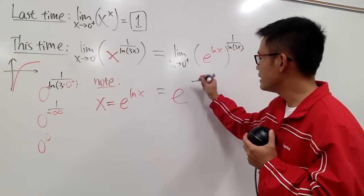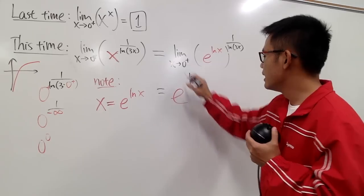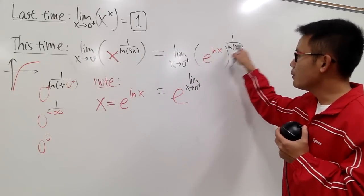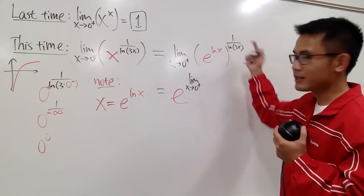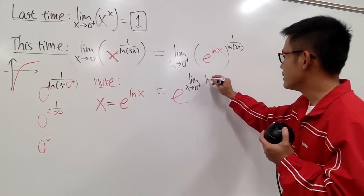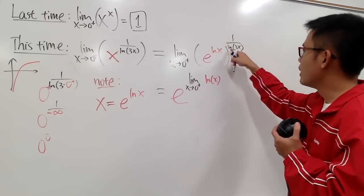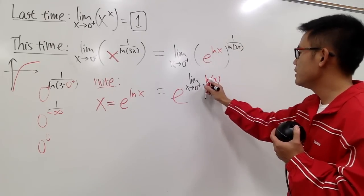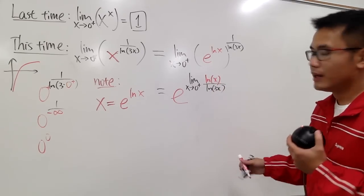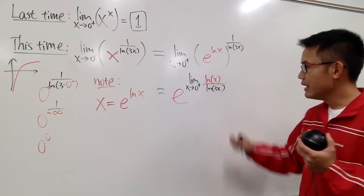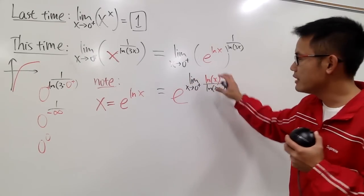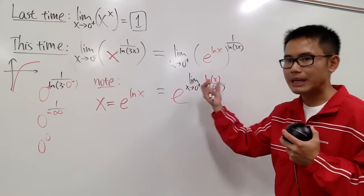So let me take the limit. Let me just write down the limit. As x goes to 0 plus, and we will multiply these two exponents together. So it's pretty much just like this: ln of x times 1 over ln of 3x, namely, over ln of 3x, like that. Our focus now is to figure out what this is, because we are just evaluating the limit of this, and then the result will just do e to that power.